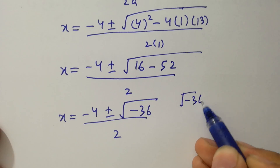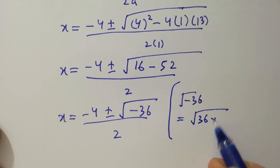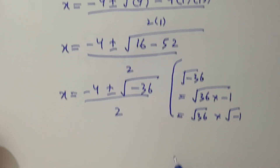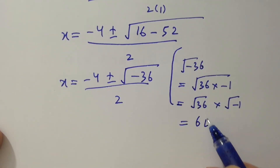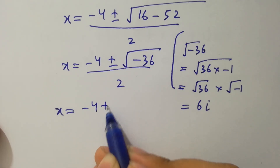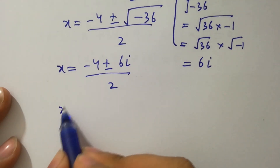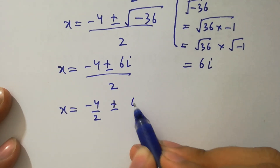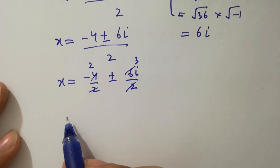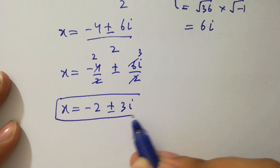We have x equal to minus 4 plus or minus square root of minus 36, over 2. Since square root of minus 36 equals square root of 36 times minus 1, which equals square root of 36 times square root of minus 1, and square root of 36 is 6 and square root of minus 1 is i, x equals minus 4 plus or minus 6i, over 2. So x equals minus 2 plus or minus 3i, which is a complex solution.